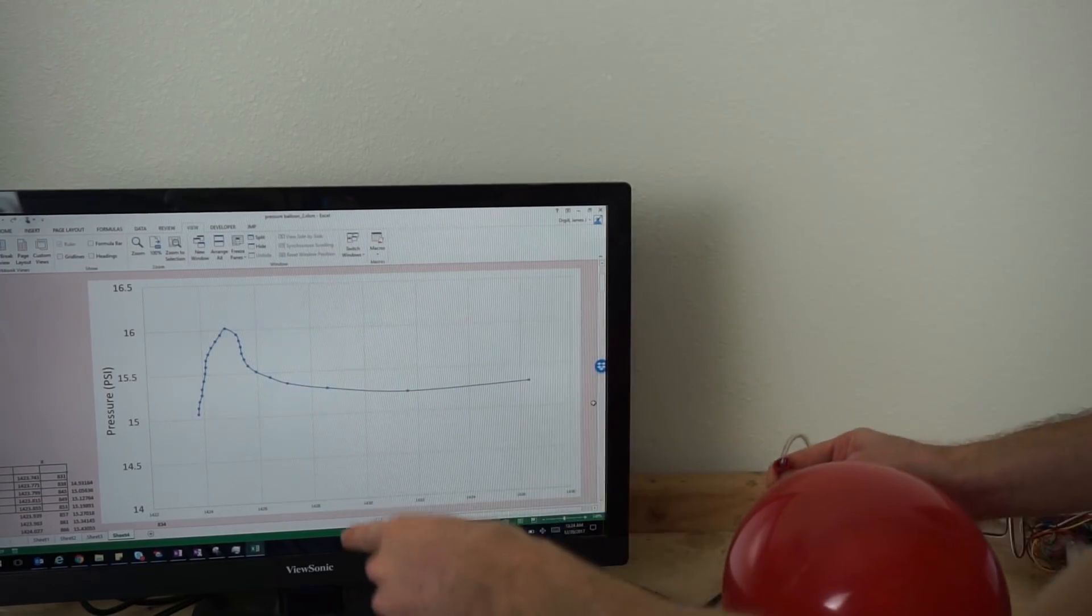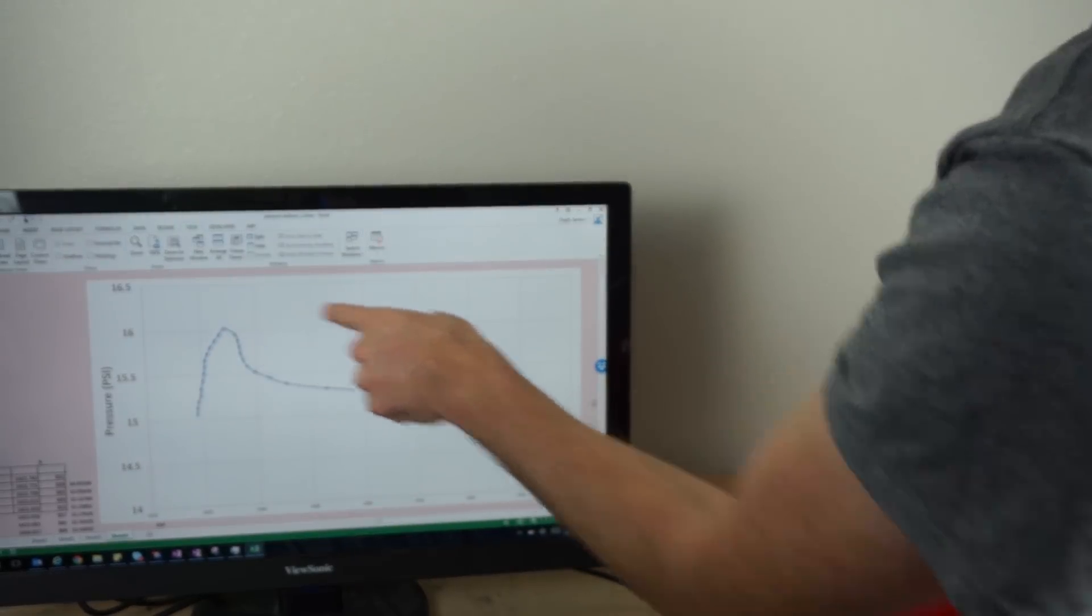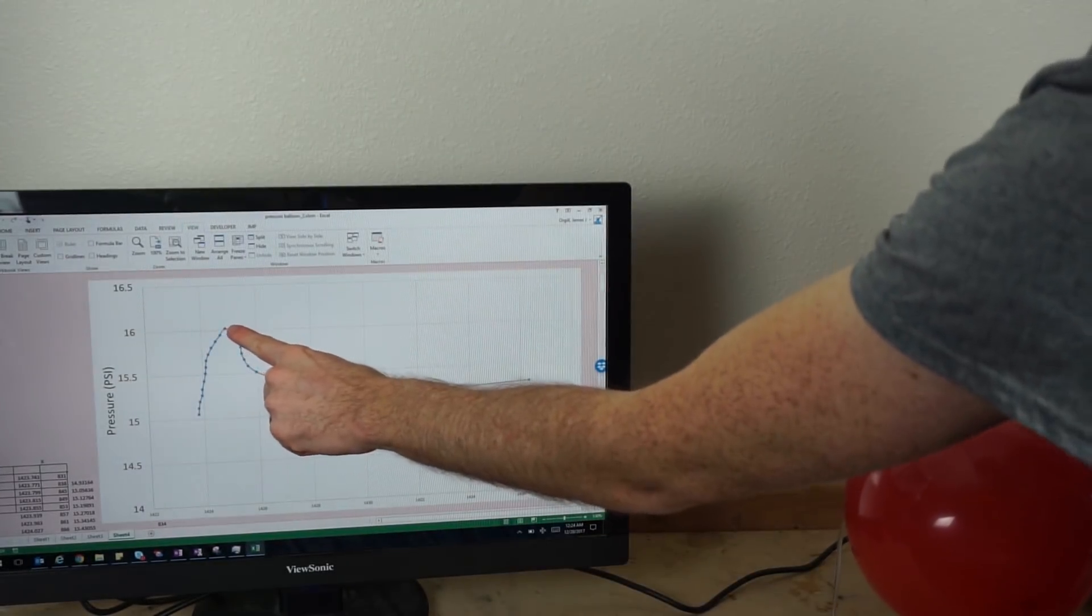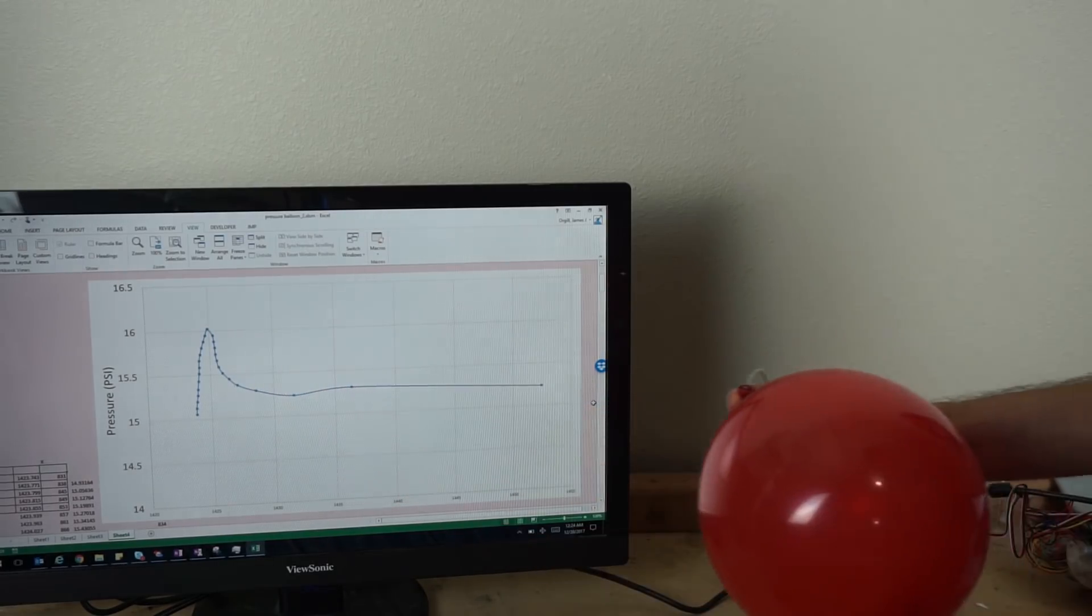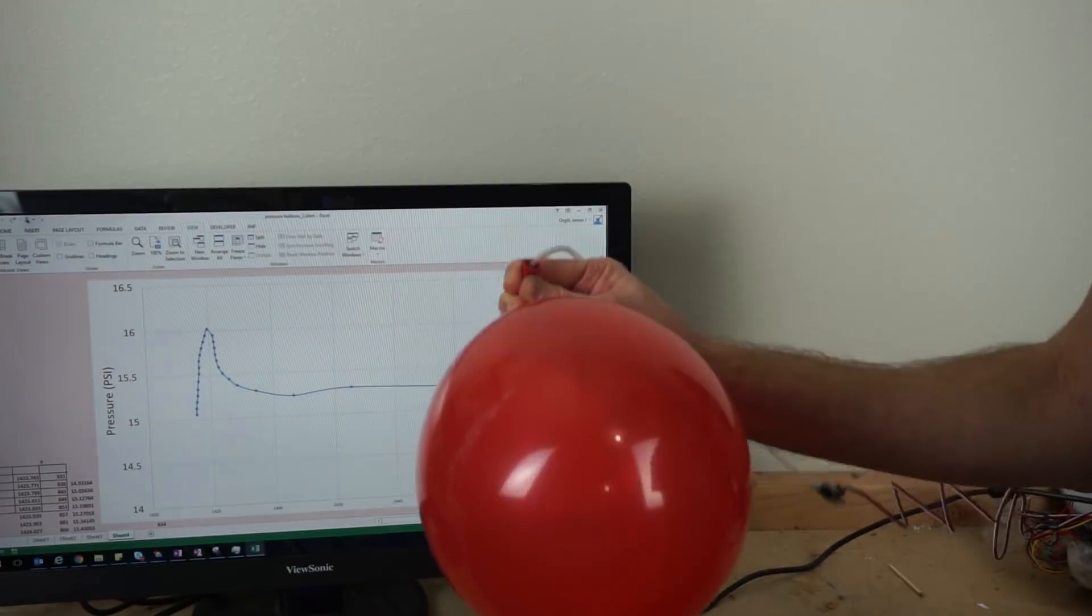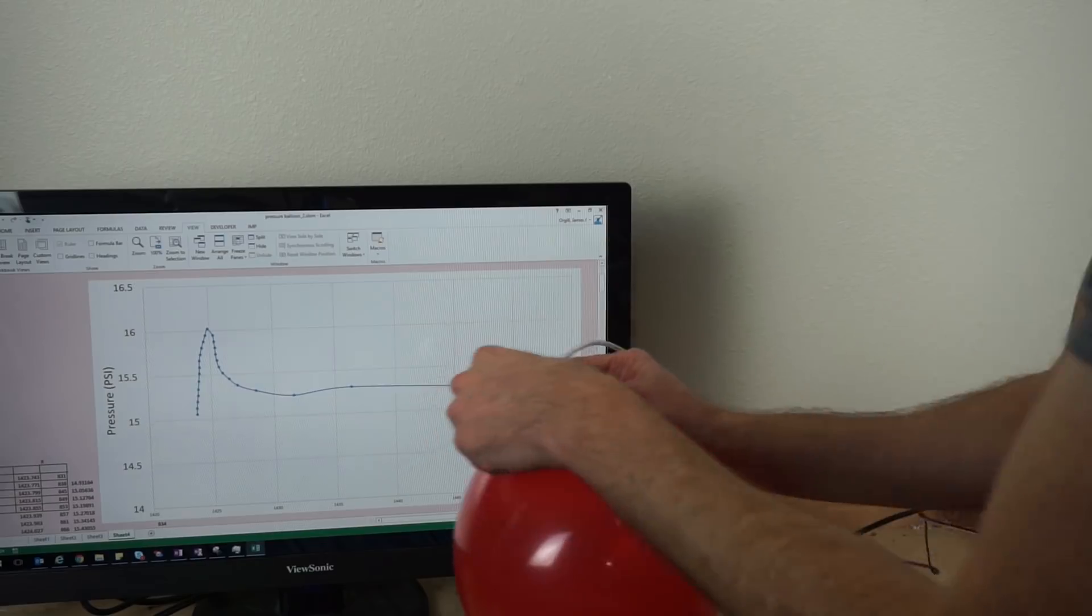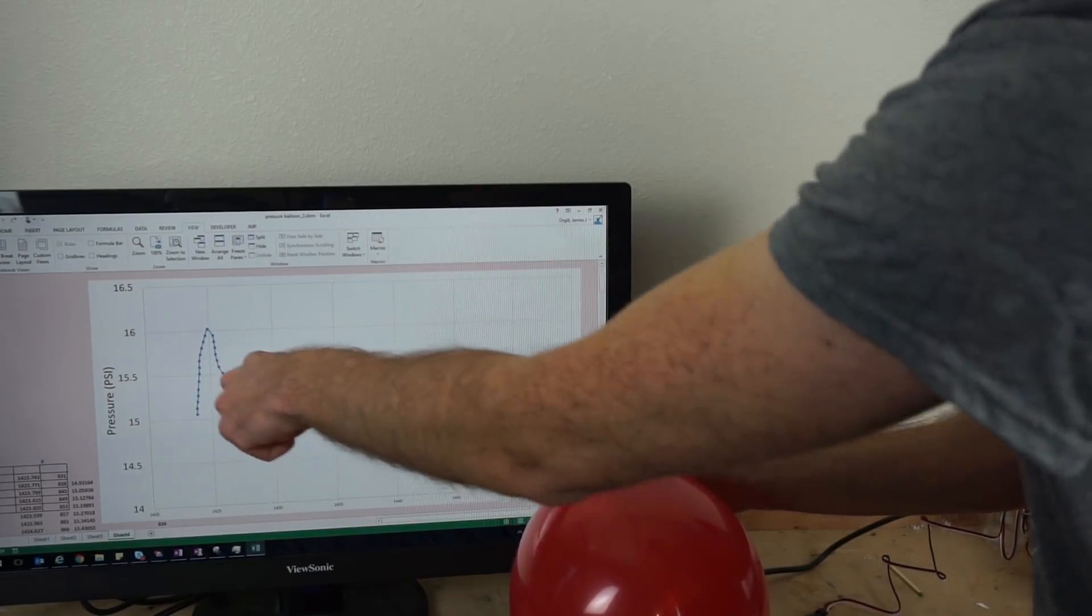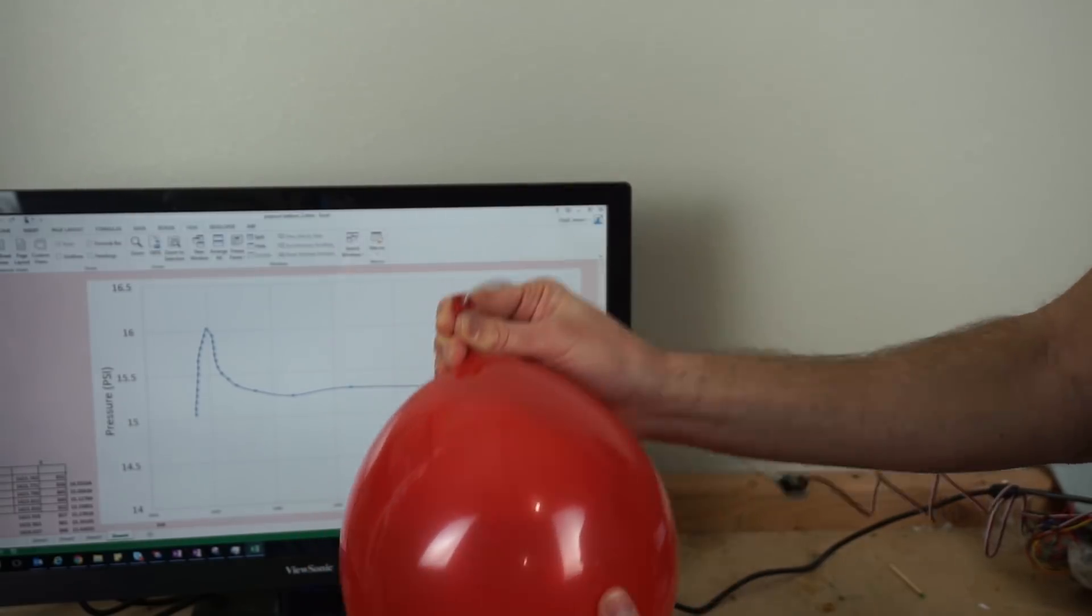So this should be really weird to you. So as I initially blow up the balloon, it jumped up in pressure. But then as I continued to blow it up, the pressure actually decreased. And it kept decreasing and kept decreasing even though the volume of the balloon increased. So here's the really interesting question. When I release the air in the balloon, do you think the pressure will go backwards and increase and then decrease? Or what will happen? So let's check it out.